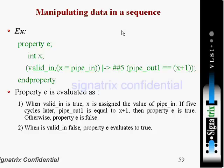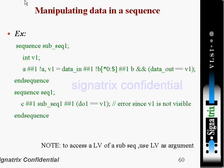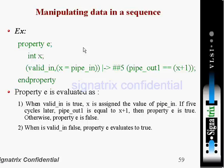Next, manipulating the data sequence. Here we are going to see one example. The 'property' keyword is used to declare our own properties. Inside, we have declared 'int x'. In that sequence, if 'valid_in' is true, then x is assigned to the value of 'pipe_in'. If five cycles later 'out_one' is equal to x plus one, then the property is true.